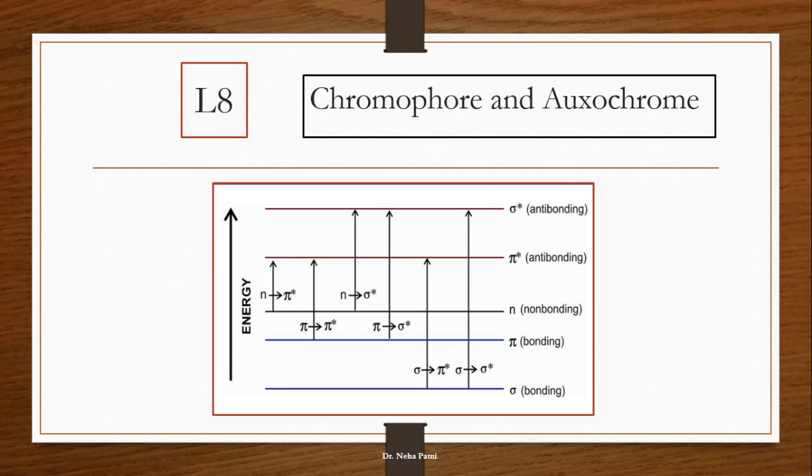These are the major transitions which show the ultraviolet spectroscopy. The energy is absorbed by the orbital and it allows the electron to transfer to another anti-bonding orbital, which comes in the range of ultraviolet.